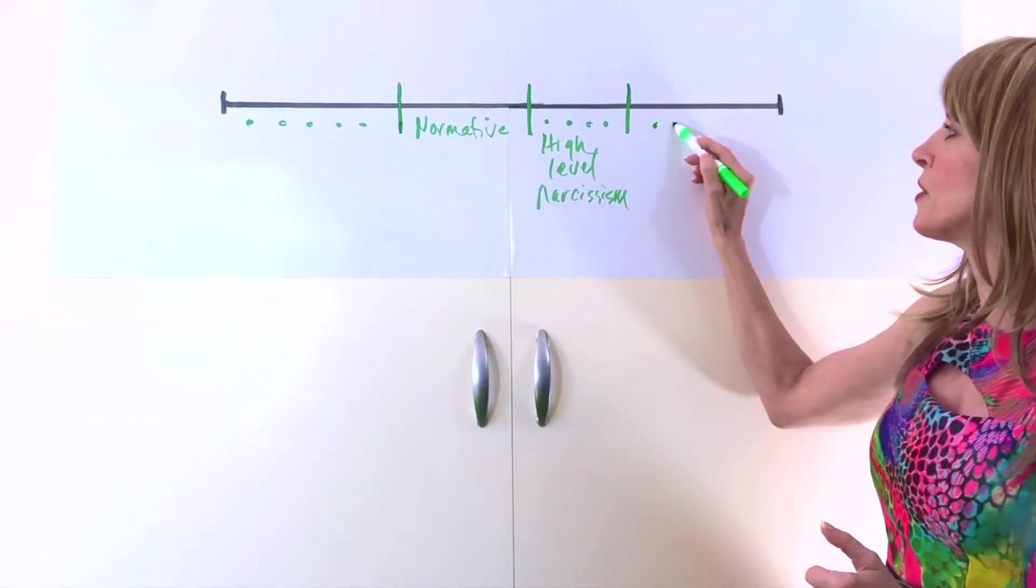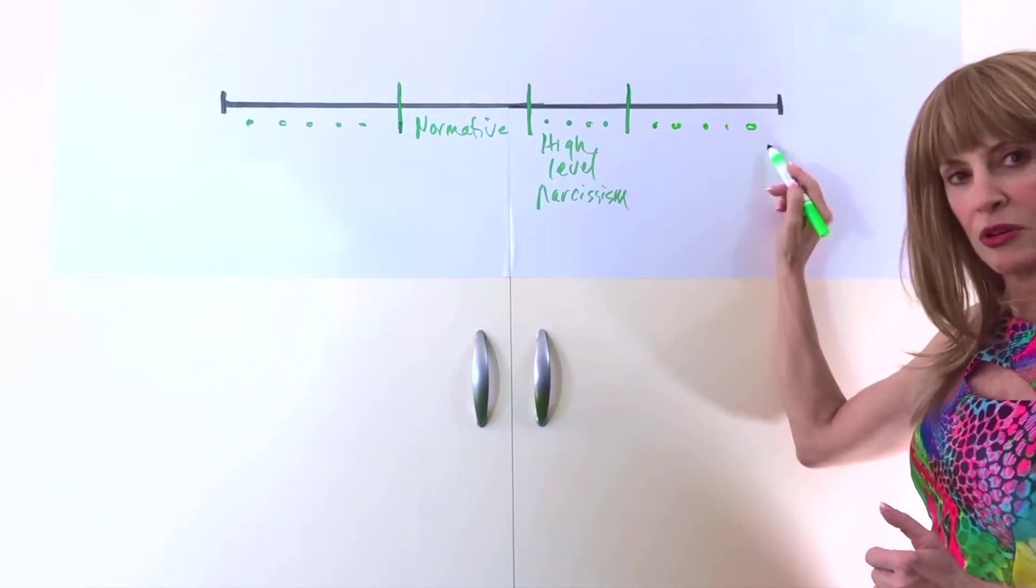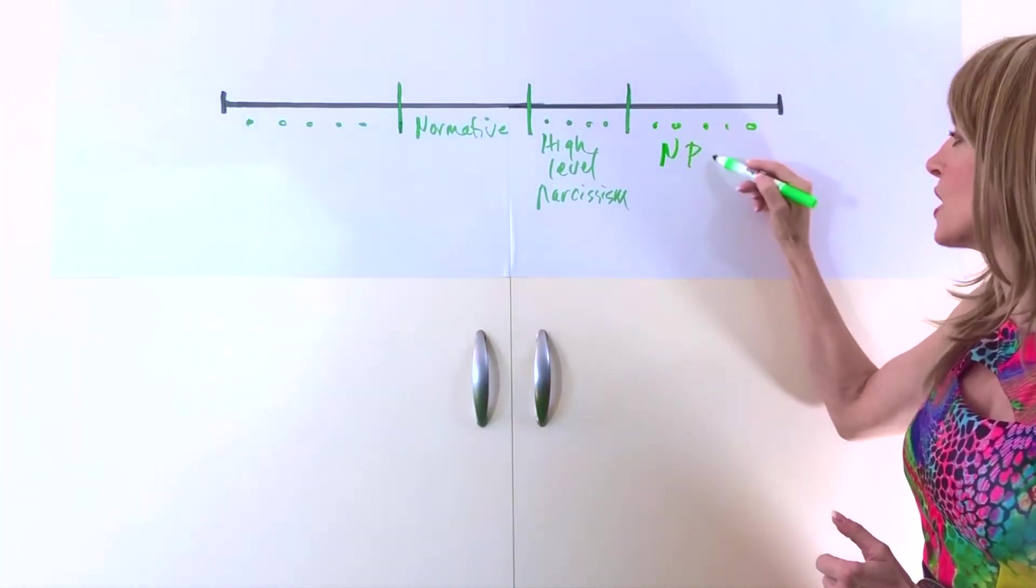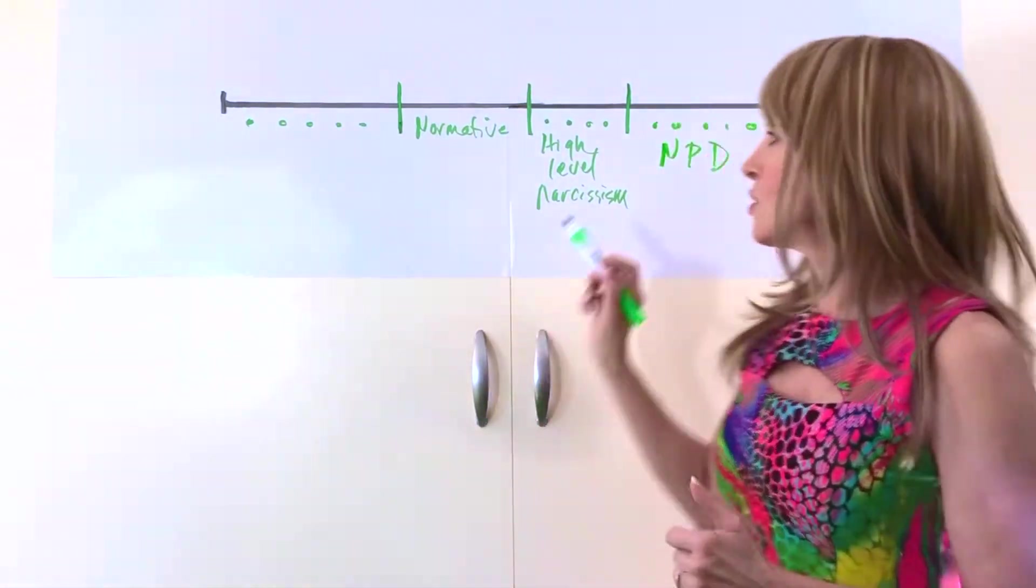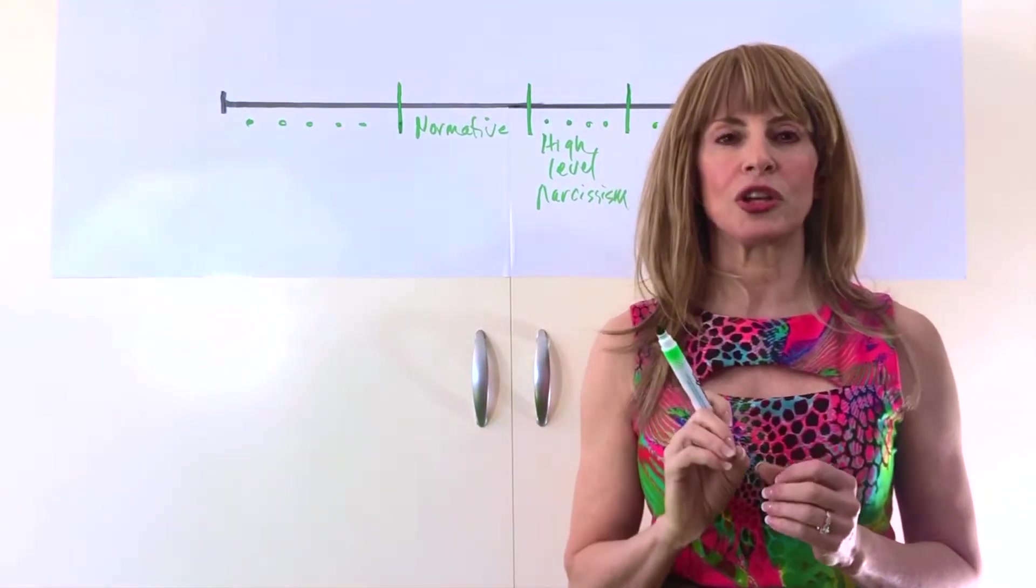Now we go up the scale more to the end. These people have what is known as narcissistic personality disorder. These folks interestingly enough are not achievers.